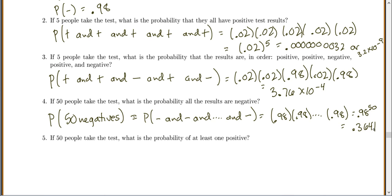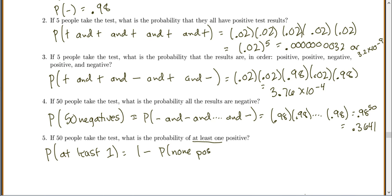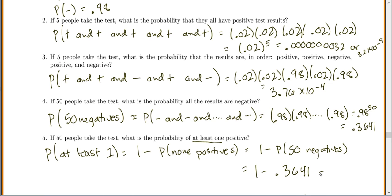If 50 people take the test, what is the probability of at least one positive? Any time you see 'at least one,' we use the complement rule. The probability of at least one positive equals 1 minus the probability of none — that is, no positives, which is the same as 50 negatives. So it's 1 minus 0.3641, which gives 0.6359.